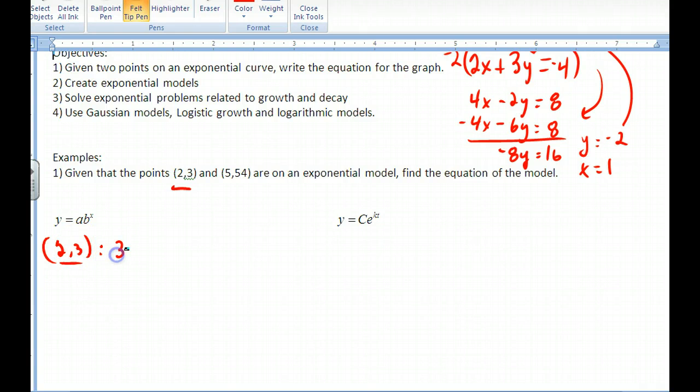Now back to this problem. If I take the (2, 3), we want to write an equation for this. The 2 unknowns are going to be a and b. So I have 3 = ab^2. That's one equation, 2 unknowns. I can use the (5, 54). So 54 = ab^5. Two equations, two unknowns.